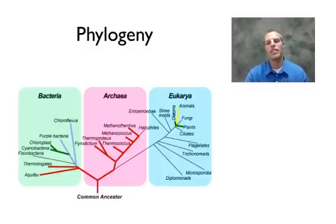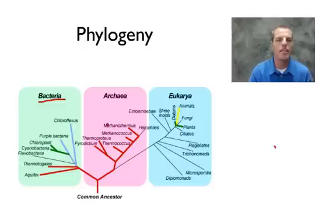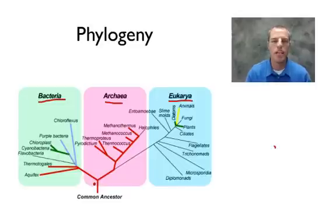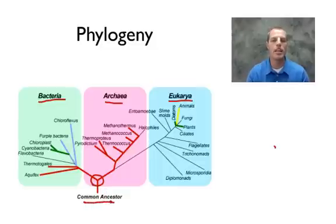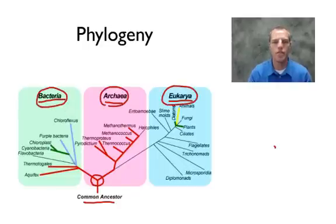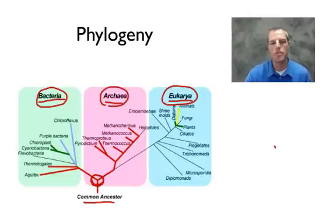Going to our phylogenetic tree, we have three main groups or domains: the domain Bacteria, the domain Archaea, and a third one called Eukarya — from the word eukaryotes, organisms that have a nucleus. The point at the bottom of the tree represents what we call a common ancestor — meaning this was the common ancestor to all bacteria, archaea, and eukaryotes, and all three groups point back to it.